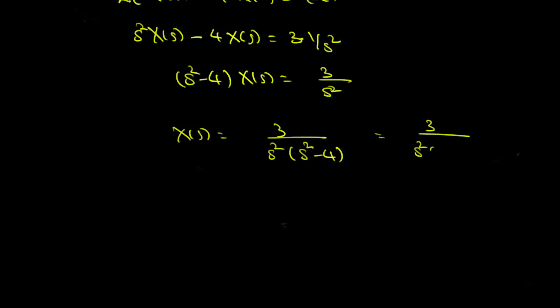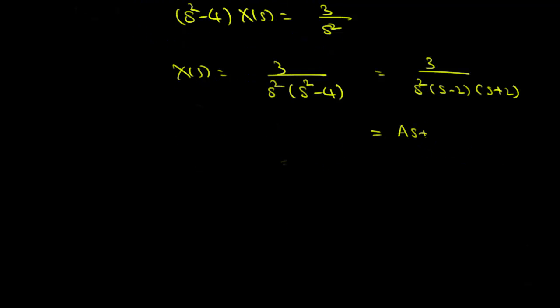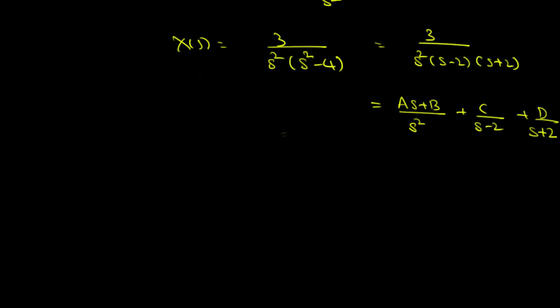We write X of s equals 3 over s squared times (s minus 2)(s plus 2) as a partial fraction decomposition: A over s plus B over s squared plus C over (s minus 2) plus D over (s plus 2). By taking the LCM of the three fractions and comparing the coefficients with 3 over s squared times (s squared minus 4), we get A equal to 0, B equal to minus 3 over 4, C equal to 3 over 8, and D equal to minus 3 over 8.